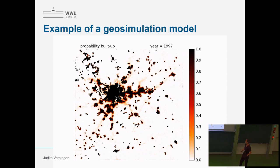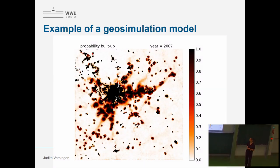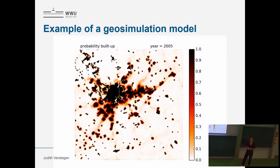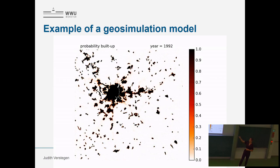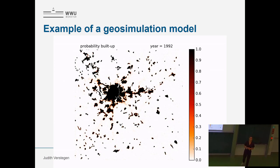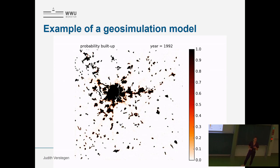Here's an example of a geosimulation model of the city of Madrid. The model predicts where the city is expanding over time, starting in 1992 through 2012. In black are urban cells, white are non-urban. The model is probabilistic — it doesn't deterministically say this cell becomes urban, but gives a probability. Over time you see red colours appearing, indicating uncertainty about whether a cell will be urban.